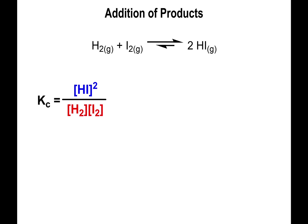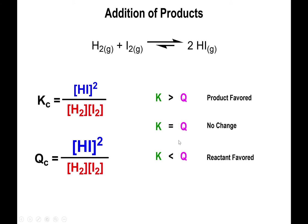The same logic applies when you add more products: the numerator becomes larger than it should have been, so the value of Q ends up larger than K, meaning you will shift to the reactant side. Wherever you add something, you shift to the opposite side. This is all based on what's happening to the equilibrium fraction.